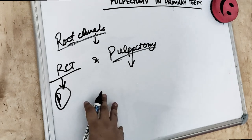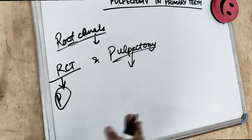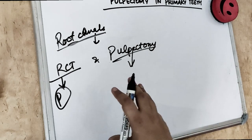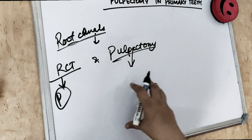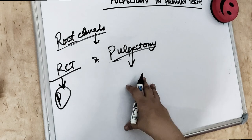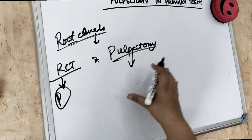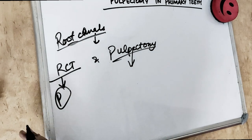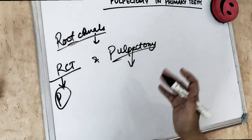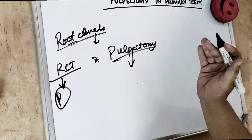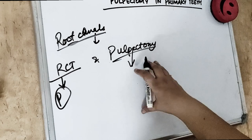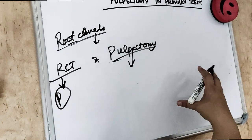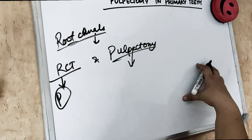Now, where do we do this pulpectomy procedure? It is done in primary teeth with necrotic pulp, or where the canal is accessible — because reaching a canal in a primary tooth is actually difficult. Doing a root canal in permanent teeth is easier than in primary teeth. Also, the bone should be normal and not compromised, because if the bone is compromised, the pulpectomy procedure is going to fail.